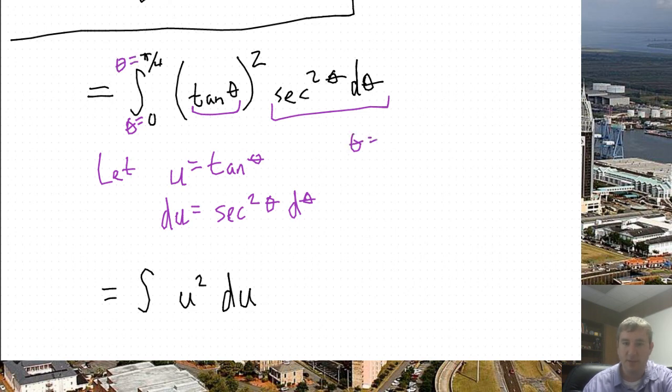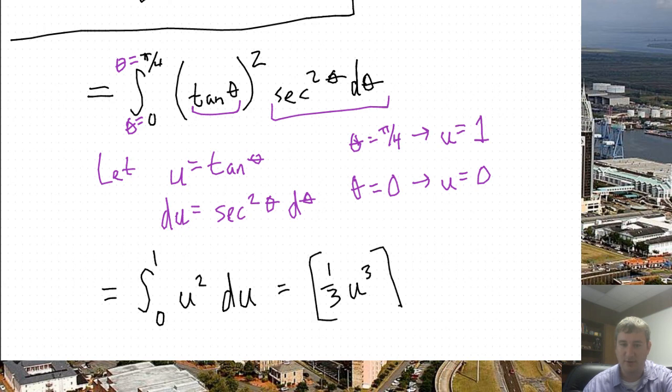And that will become u equals the tangent of theta. So the tangent of π/4 is just 1. Likewise, theta equals 0. The tangent of 0 is just 0. So I've got very nice bounds of integration, 0 to 1. This will probably be the easiest integral I do all day. 1/3 u cubed evaluated from 0 to 1.